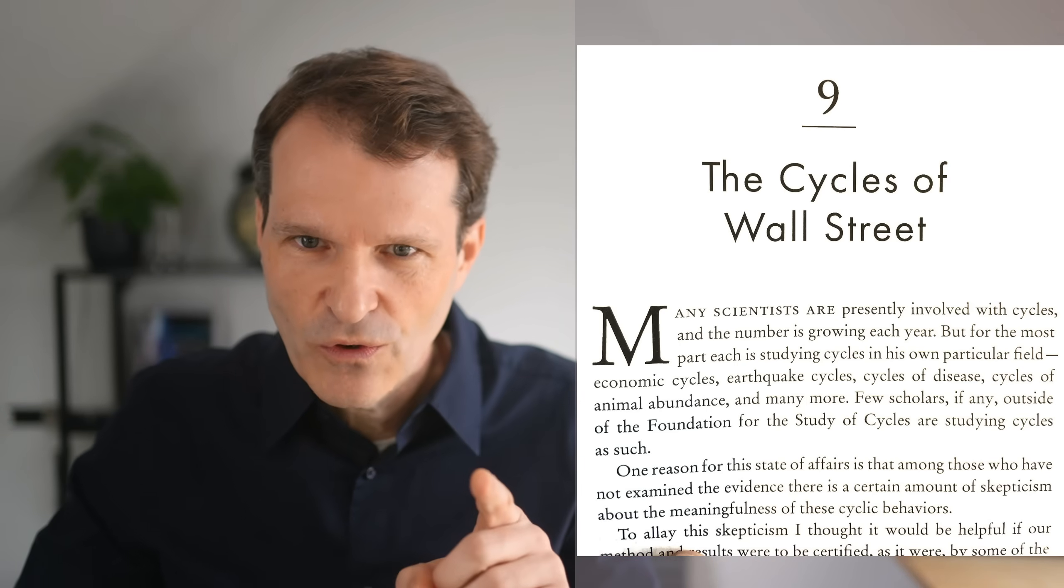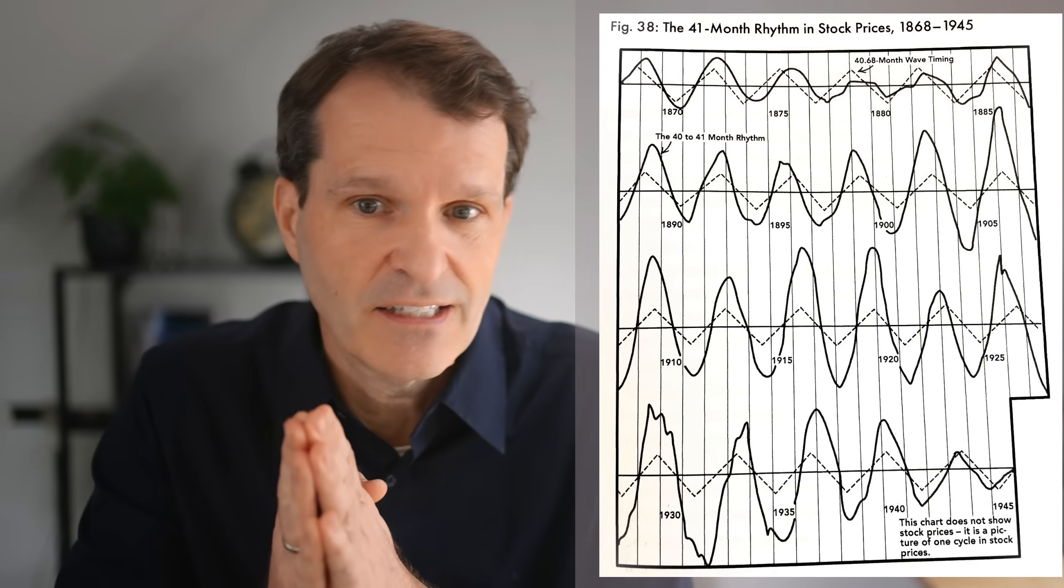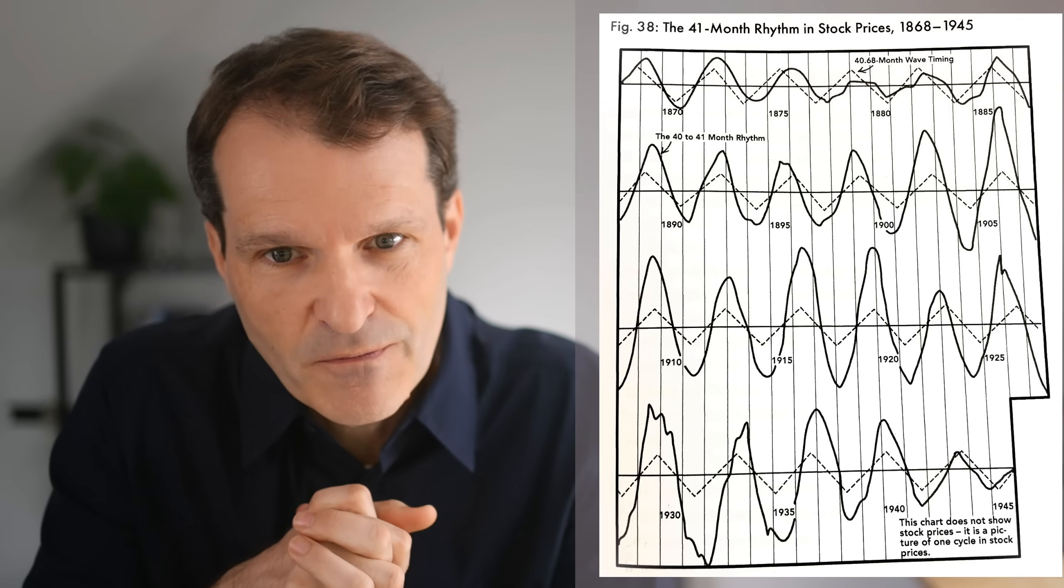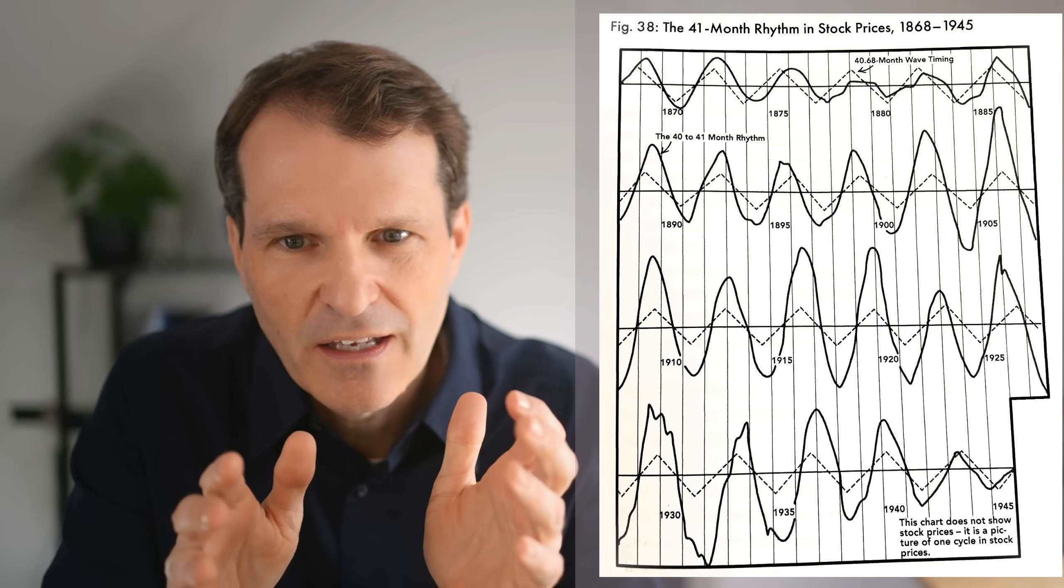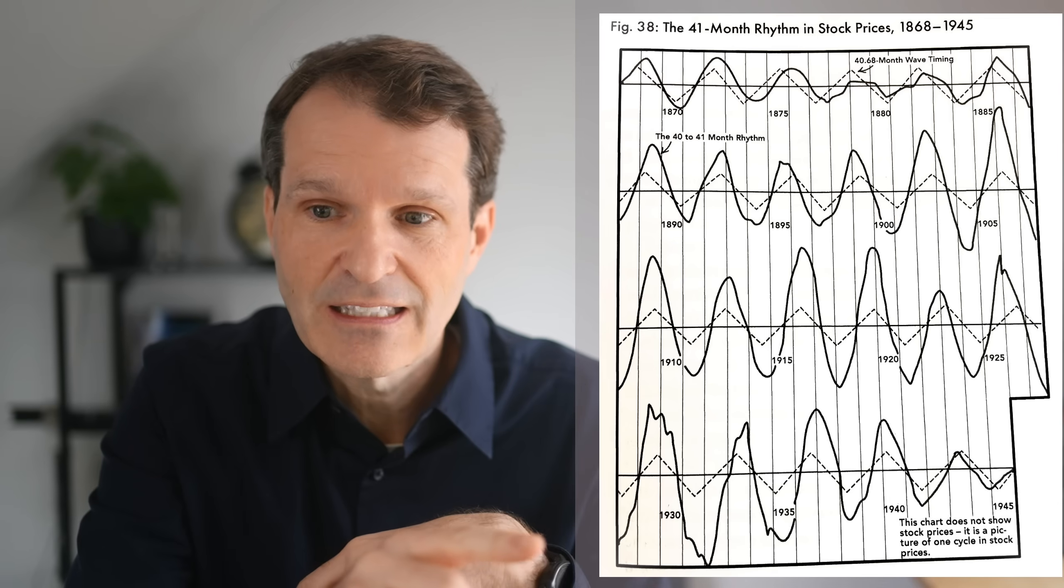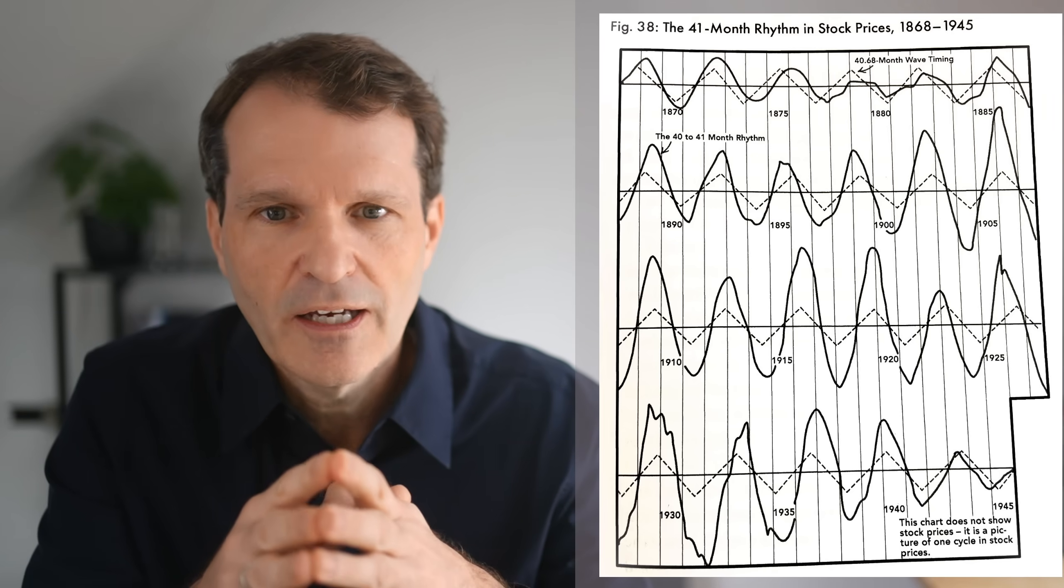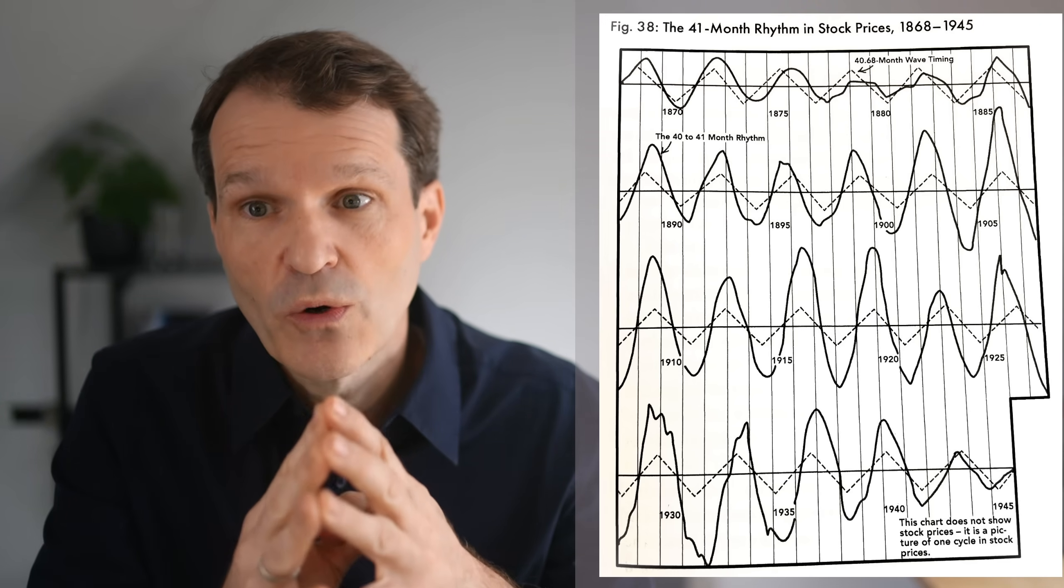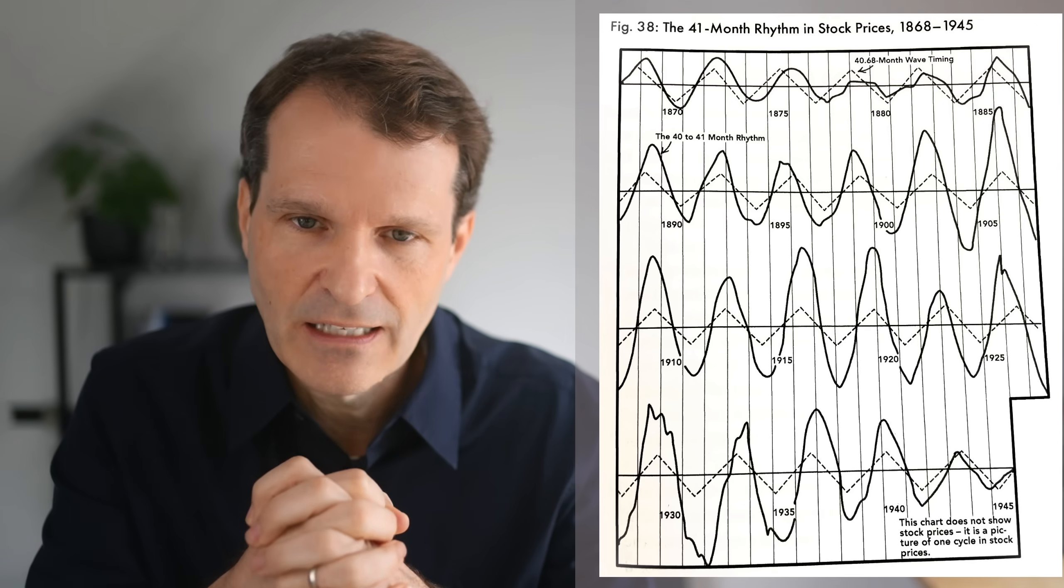What I want to review with you today is part of Chapter 9. The chapter is titled 'The Cycles of Wall Street' and refers to cycle analysis in the stock markets. Today's focus is on the 41-month cycle in stock prices. He did this analysis in the year 1945, about 70-80 years ago.